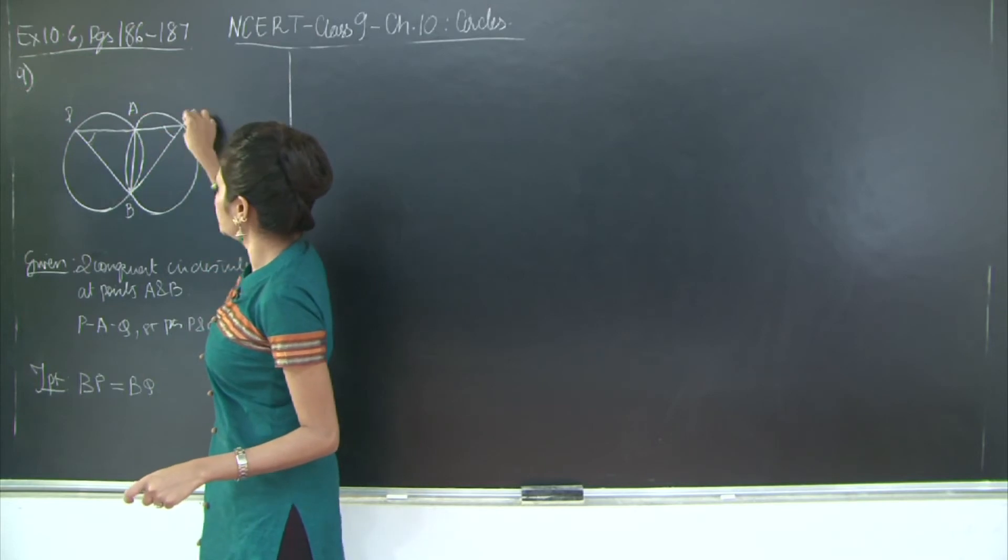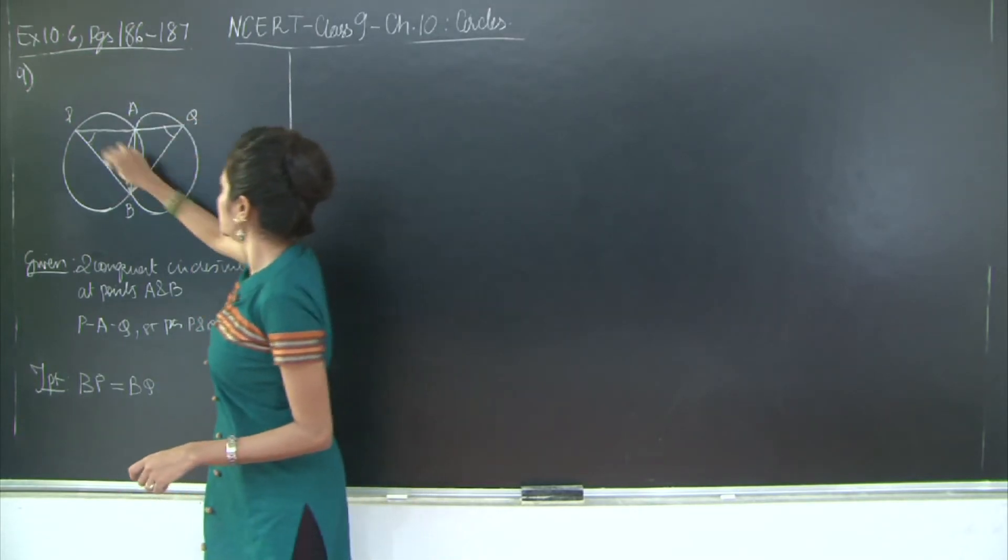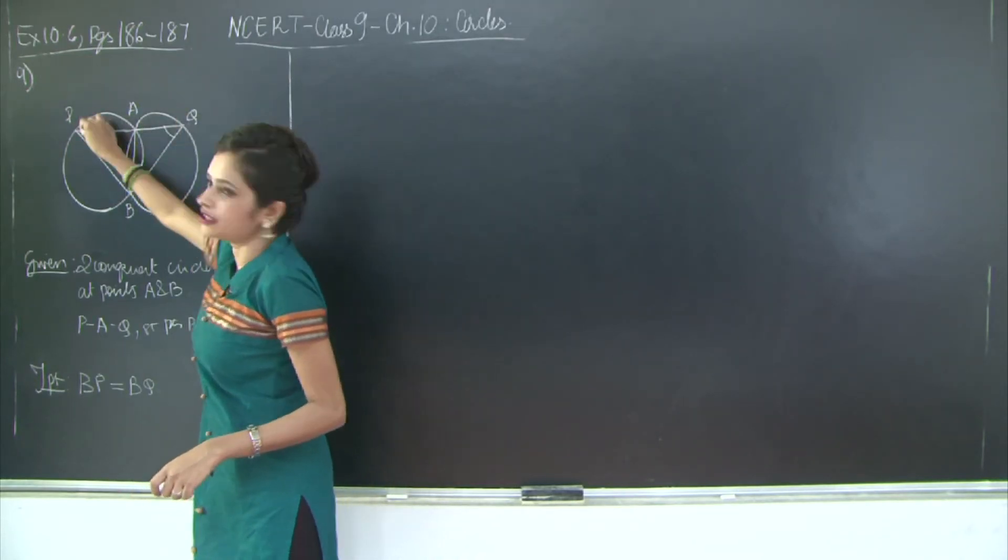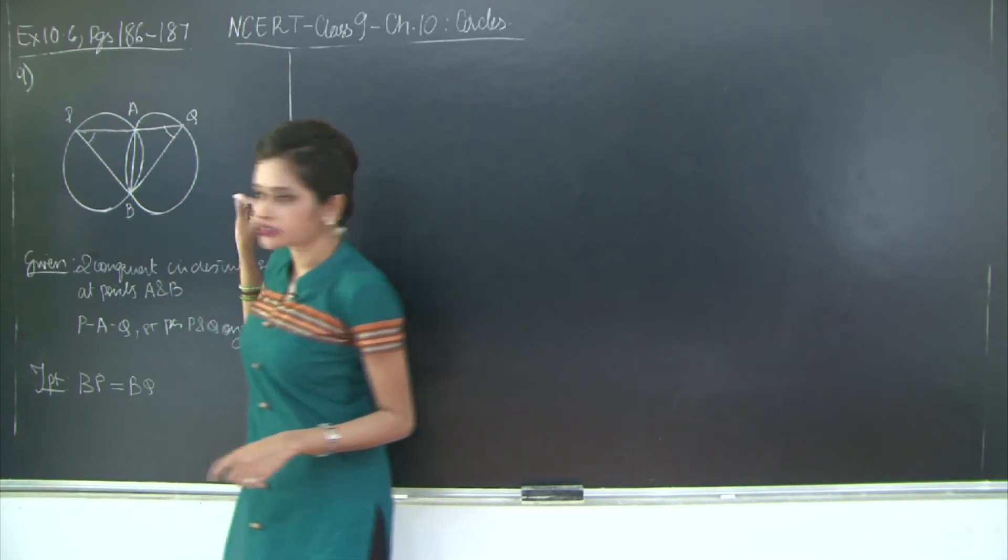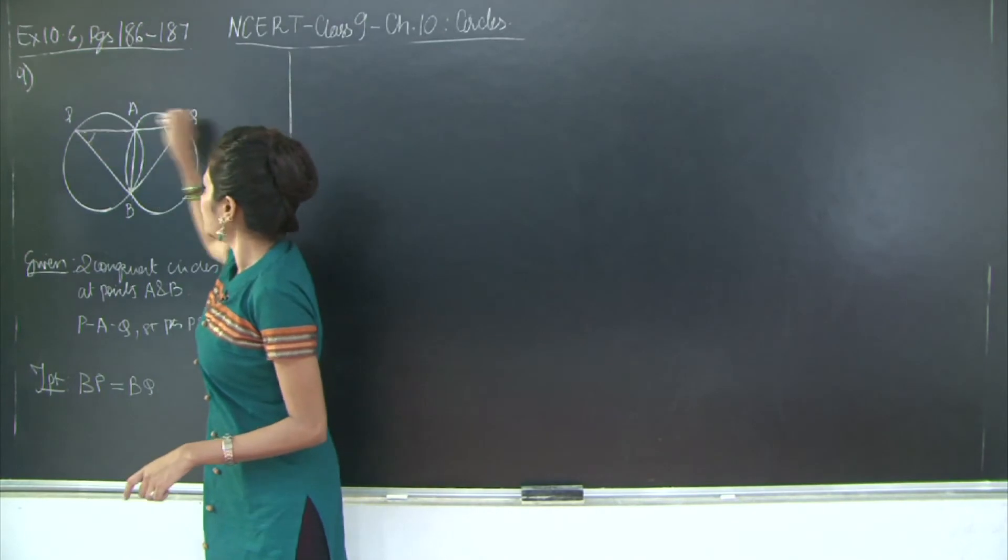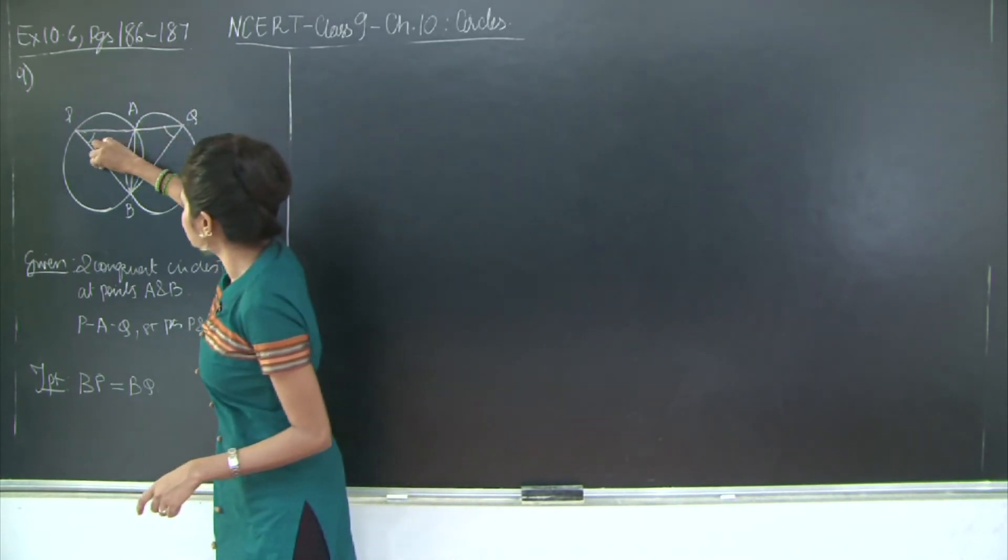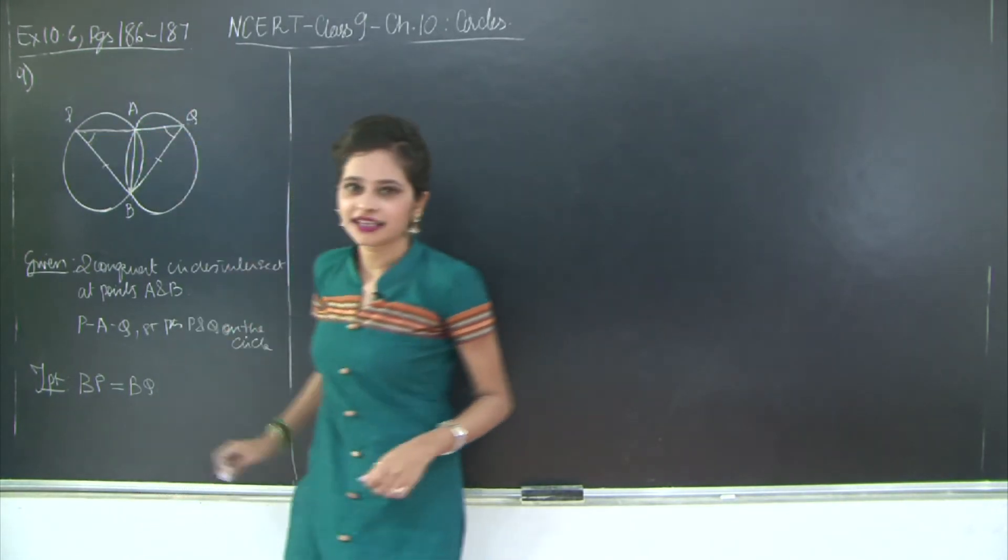BPA is equal to BQA. So that means BPQ is equal to BQP. Now these are forming the base angles of isosceles triangle BPQ. Therefore this side is equal to this side.